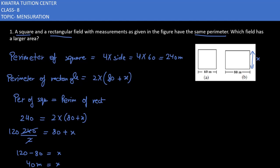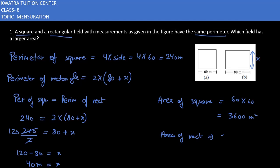Now they ask which field has the larger area. To find this, we use the formula for the area of a square first, which is side into side: 60 into 60 equals 3600 square meters. Then we find the area of the rectangle, which is length into breadth: 80 into 40 equals 3200 square meters. So the square field has a larger area than the rectangle.